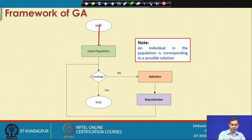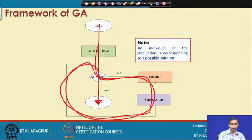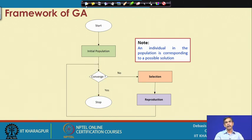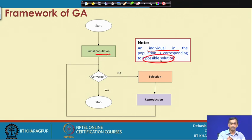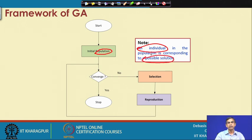Essentially, we start from an initial population and by means of selection and reproduction processes we continue until convergence is complete. One important thing is that an individual in the population is basically a possible solution — these three things are very important: individual, population, and possible solution.